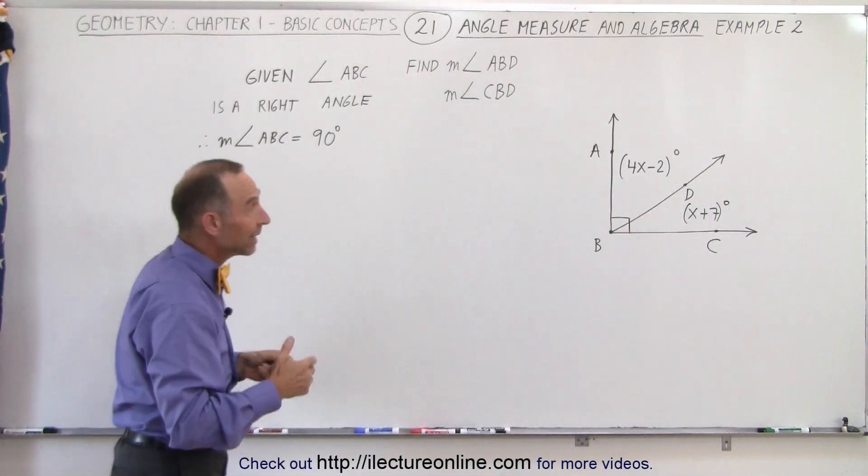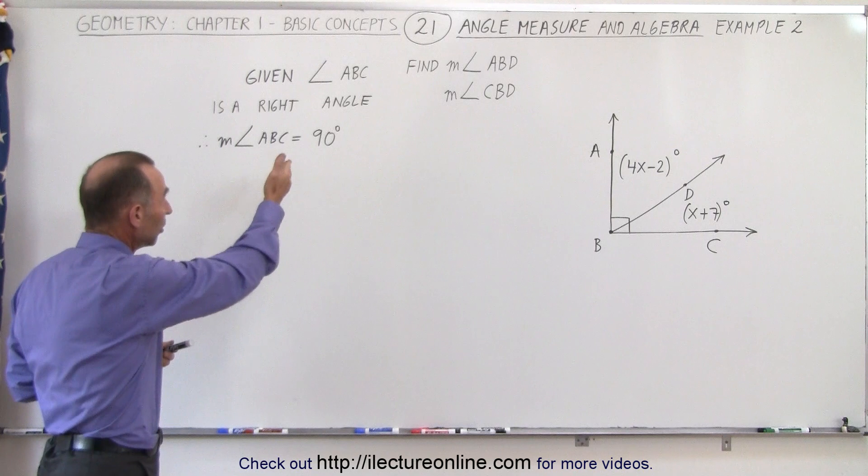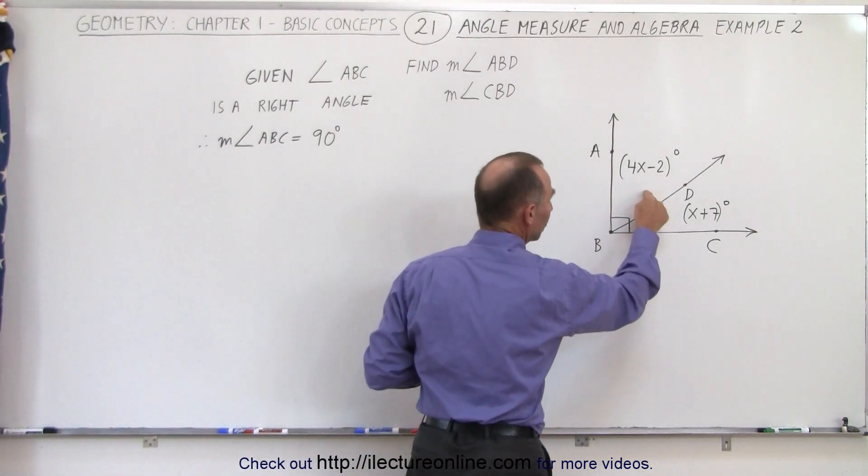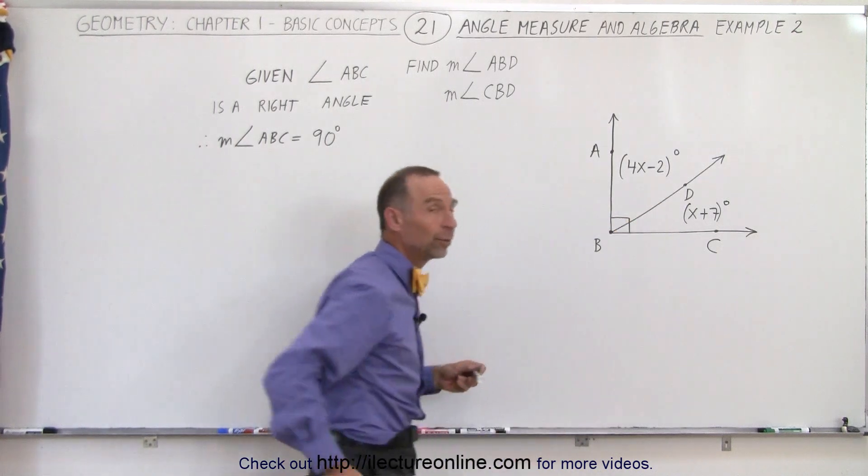That means that angle ABC has a measure of 90 degrees, which means that the measures of these two angles must add up to 90 degrees as well.